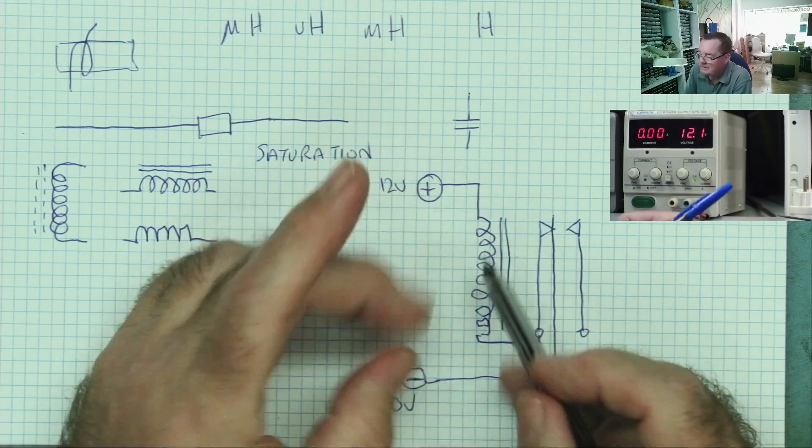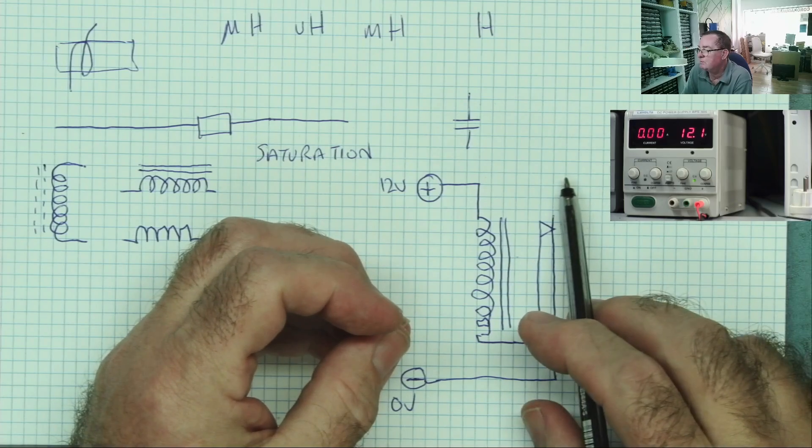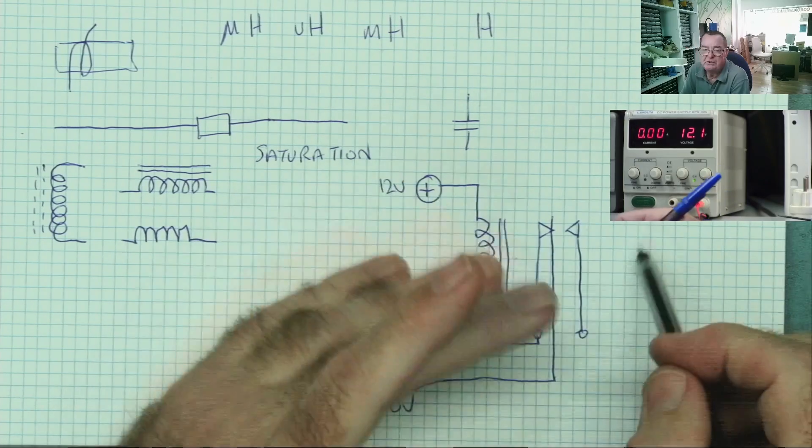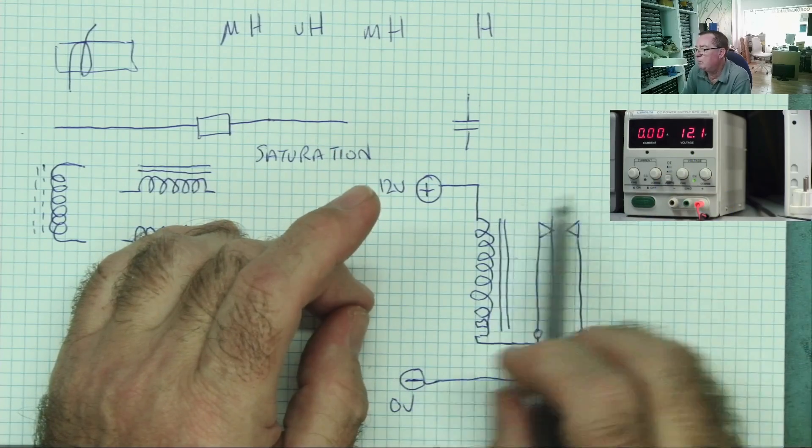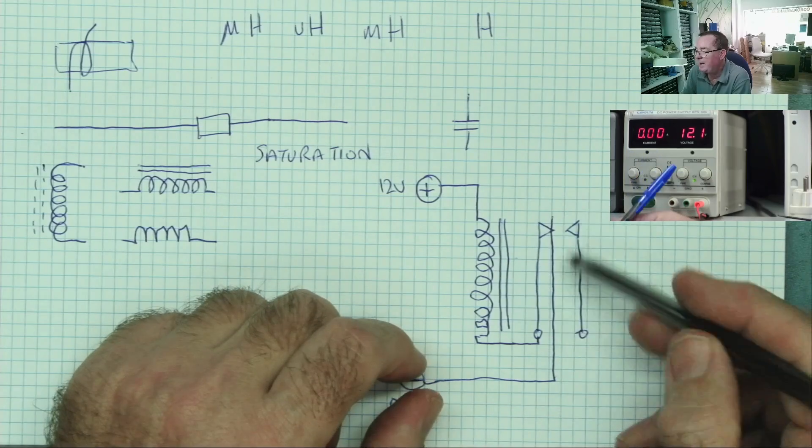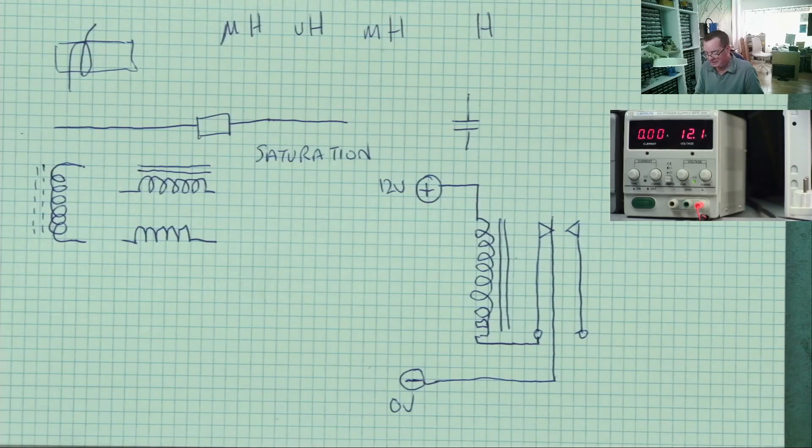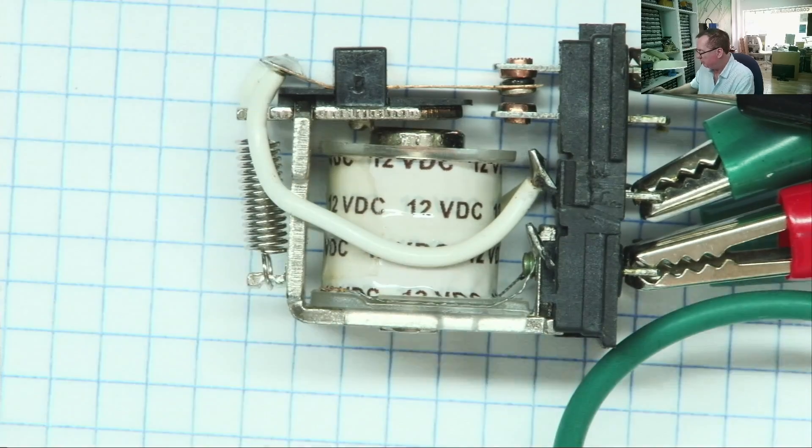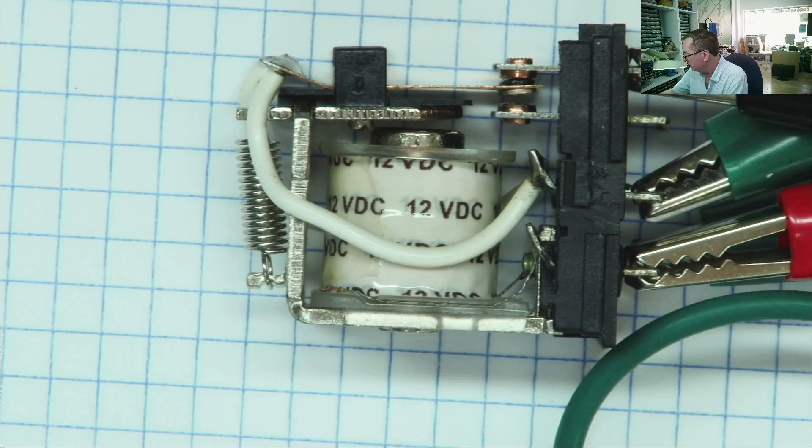So the coil de-energizes, the magnetic field collapses, causing the contact to come back on again, to cause it to energize again. So what will happen is that this will rattle backwards and forwards at speed, basically depending on the mass of the contacts, how fast they can move, and the strength of the magnetic field. So let's apply the power 12 volts, and let's see what this actually does.